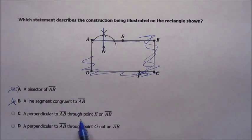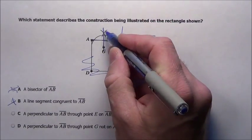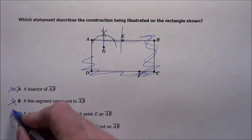A perpendicular to AB through point E, through that point on AB, we're not trying to create a perpendicular through that E, it's coming through the G obviously, so it's not that.